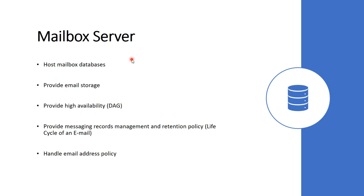Now let's look at the Mailbox Server role in detail. The Mailbox Server hosts the database that contains mailbox and public folder data. As with Exchange 2010, the Exchange 2013 Mailbox Server role can be made highly available by configuring a Database Availability Group. The Database Availability Group is a group of up to 16 Mailbox Servers which host a set of databases and provide automatic database-level recovery from failures affecting individual servers or databases.